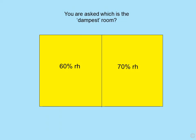If somebody presents two RH readings — 60% and 70% — and asks which is the dampest room, the answer is simply: you don't know. You cannot say, because the temperature is unknown. It may simply be a temperature factor.